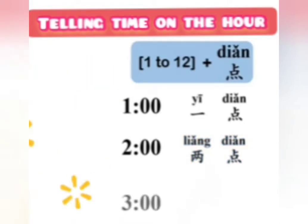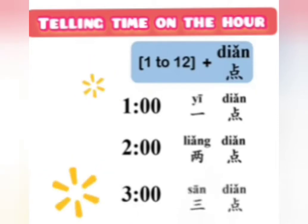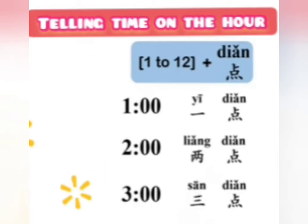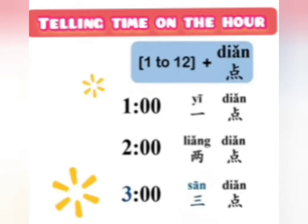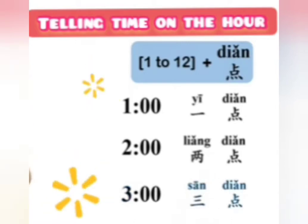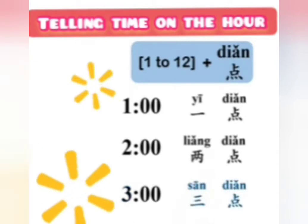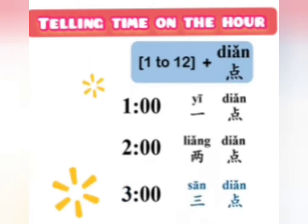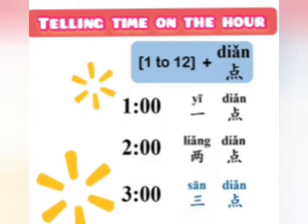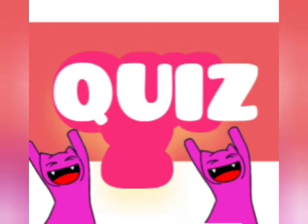Three o'clock is 三点. It's the number three, 三, plus 点: 三点 — three o'clock. Okay, now let's have a quiz.